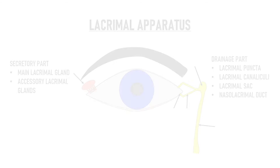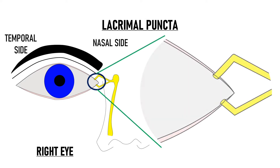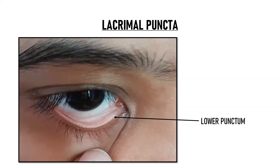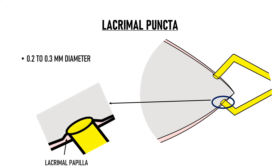The outflow of tears begins at the lacrimal puncta. This is the right eye — on the left side is the temporal side and on the right is the nasal side. There are two puncta in each eye: an upper punctum and a lower punctum. They are located on the medial aspect of the upper and lower eyelid margins. Each punctum is about 0.2 to 0.3 mm in diameter. It sits on top of an elevation known as the lacrimal papilla, and the punctum lies at the apex of this elevation.